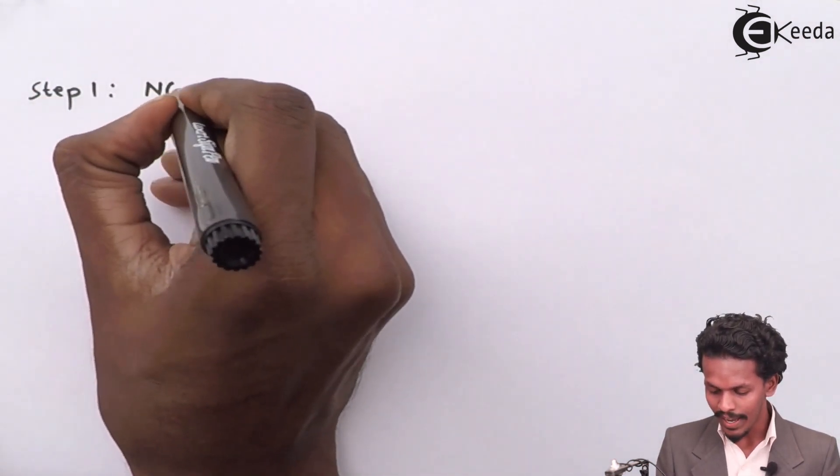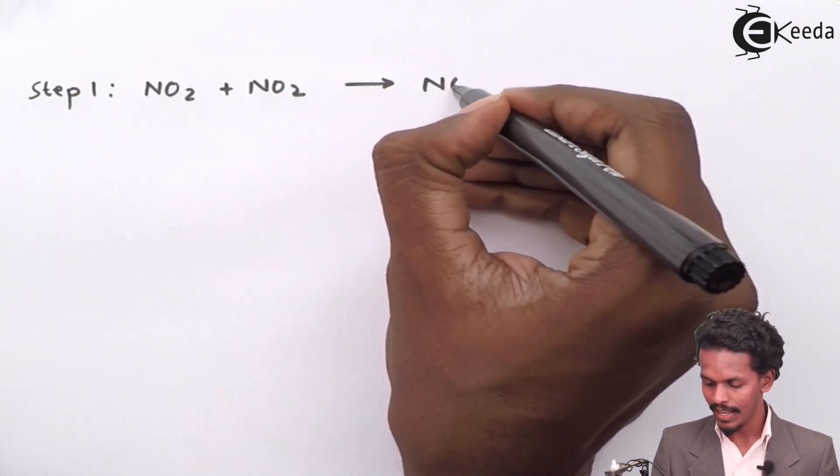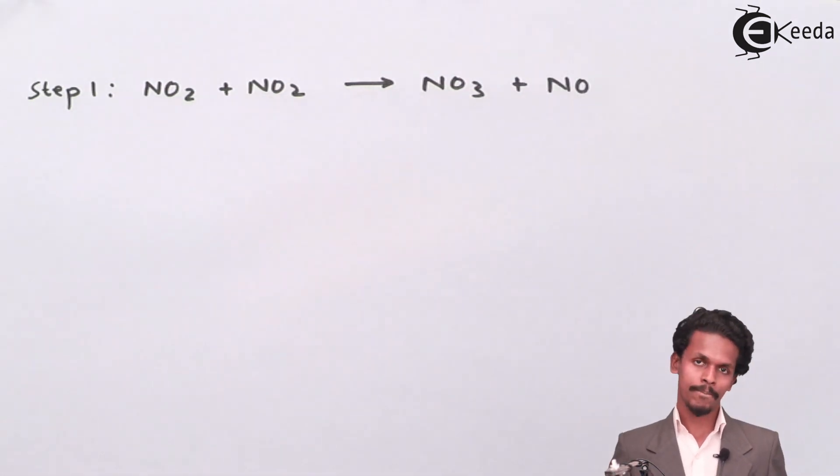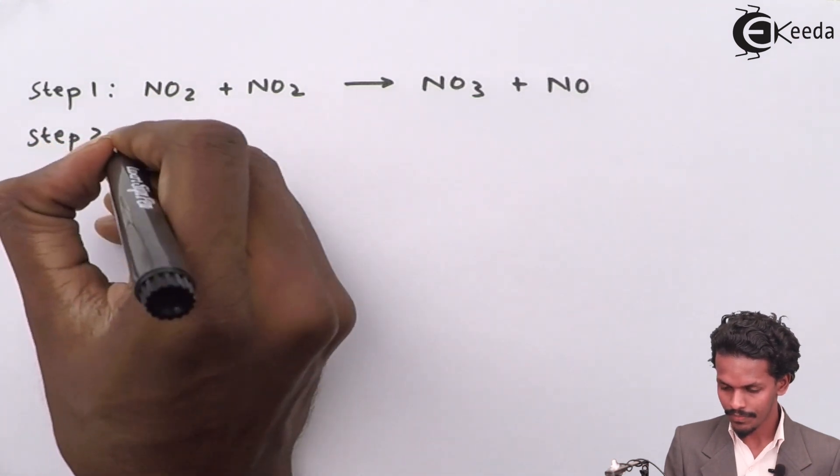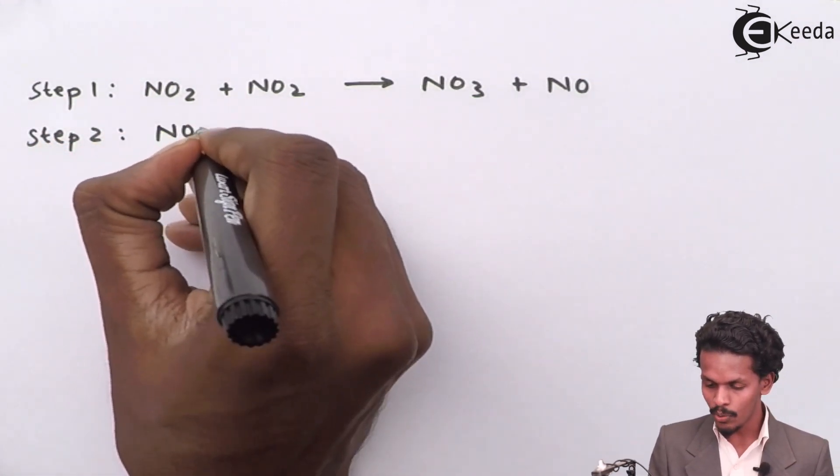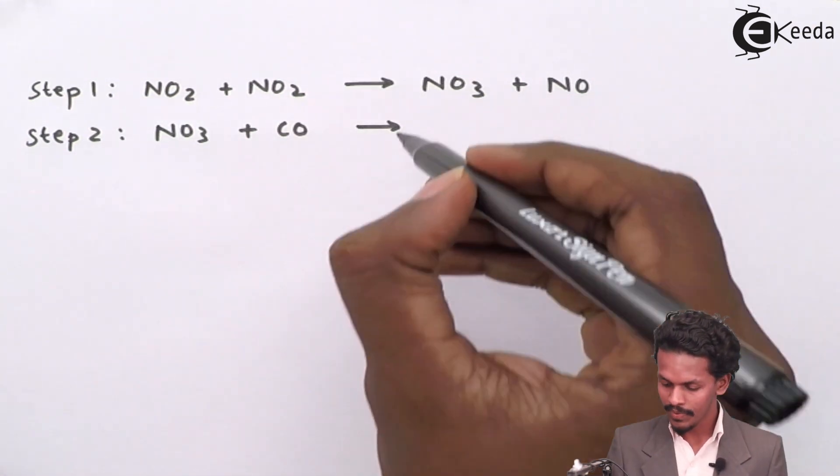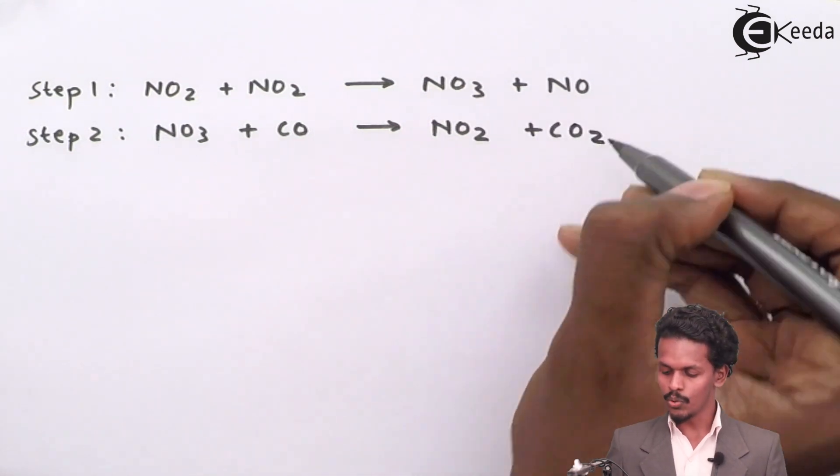Step number one was NO2 plus NO2, which gave us NO3 plus NO molecule. In step number two, NO3 in combination with CO gives us NO2 and CO2.